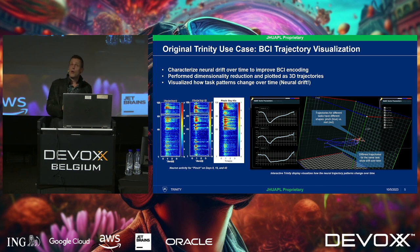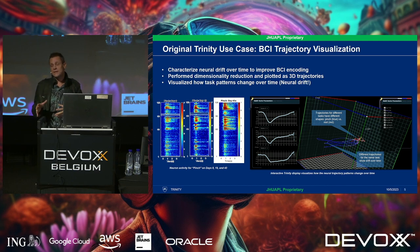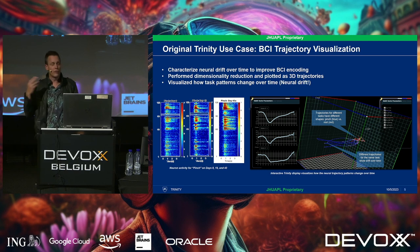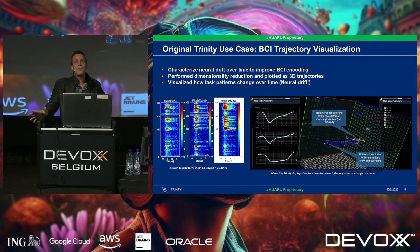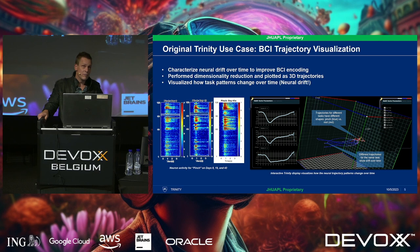What they found was they would train the decoder model and it would work great — then the next day a little less, and then less again, and by the end of the week it was garbage and unreliable. Which is why they just said we're going to train every day. But they couldn't figure out why. I read some papers and talked to some people smarter than me, and we realized they were using a linear decoding process, but this is non-linear.